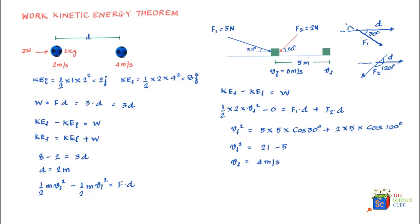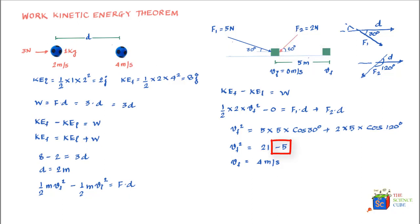Force F1 is helping the mass move in the direction of displacement, while the horizontal component of F2 opposes the motion — it acts against the displacement and therefore does negative work, removing energy from the mass. Conversely, the horizontal component of F1 does positive work, increasing the kinetic energy of the mass.